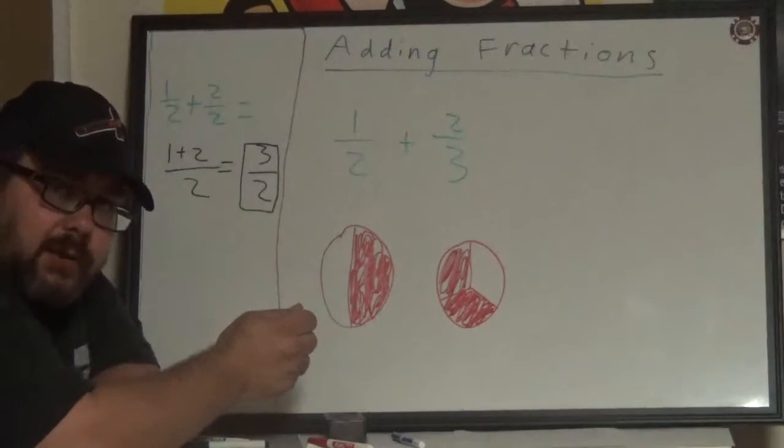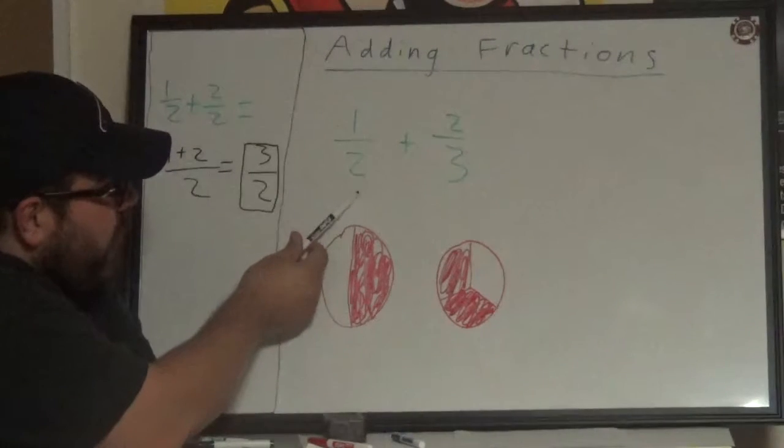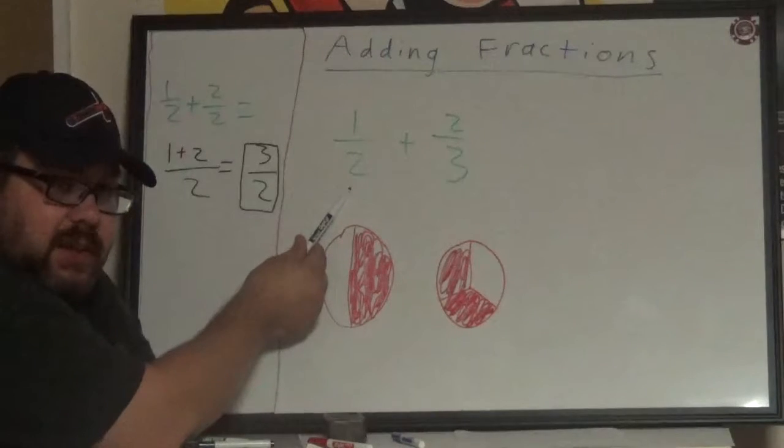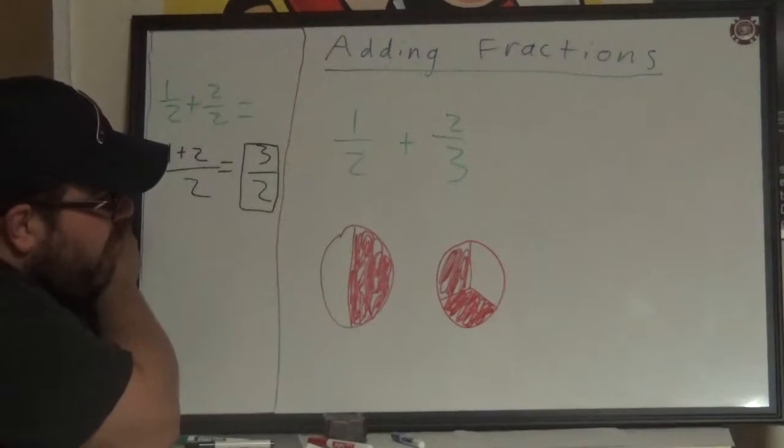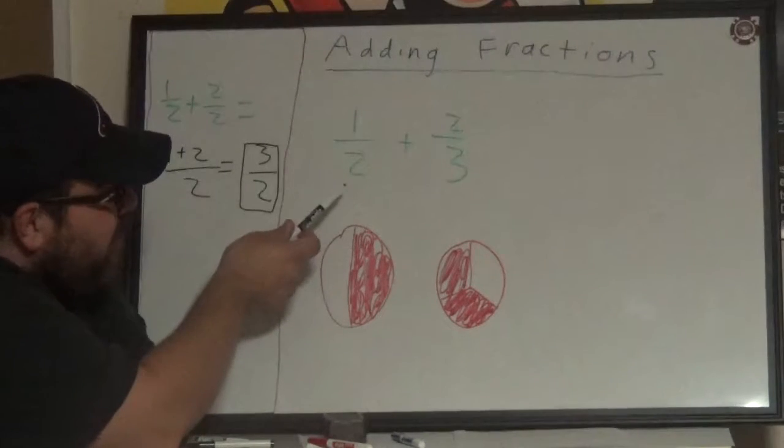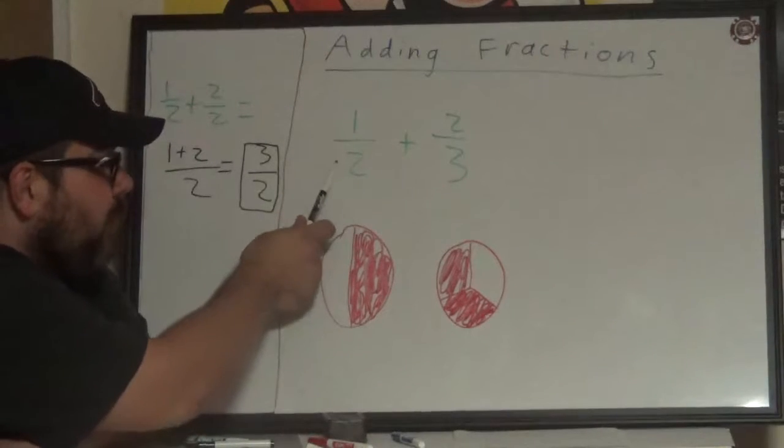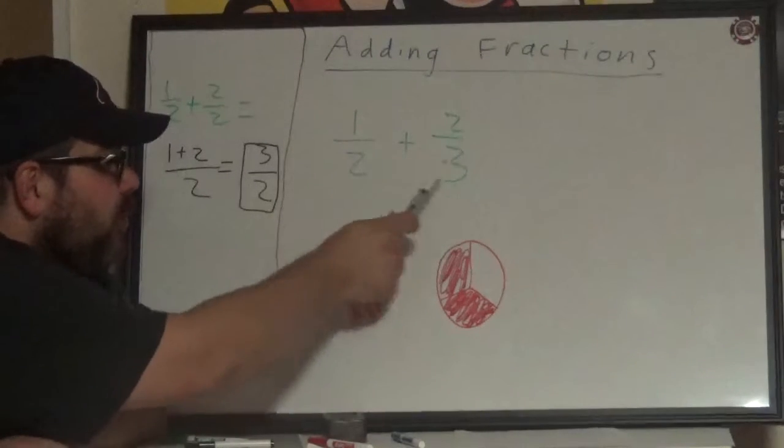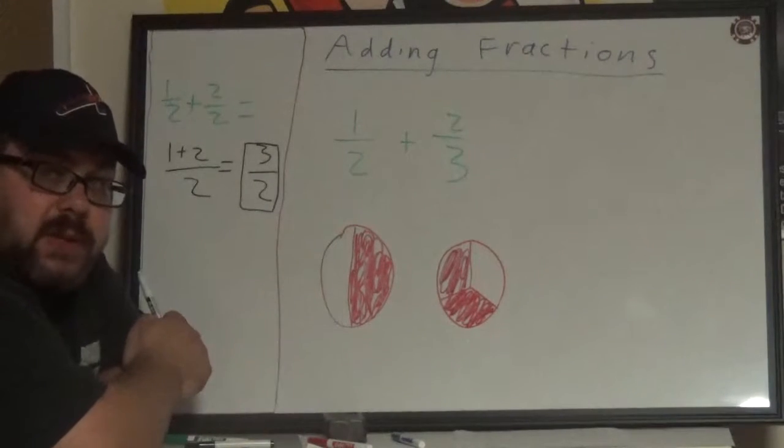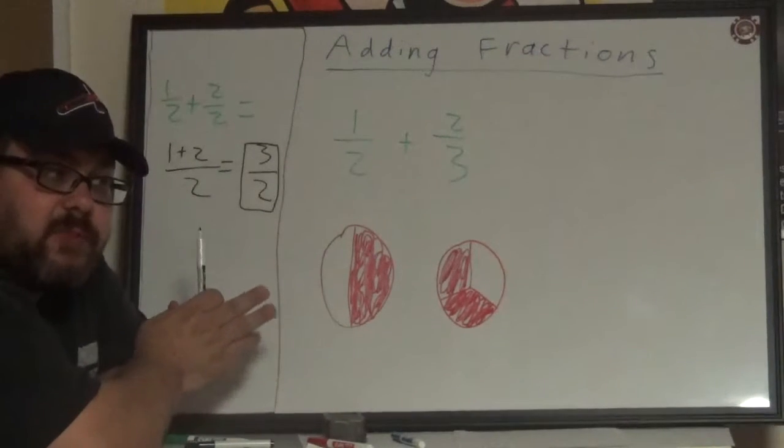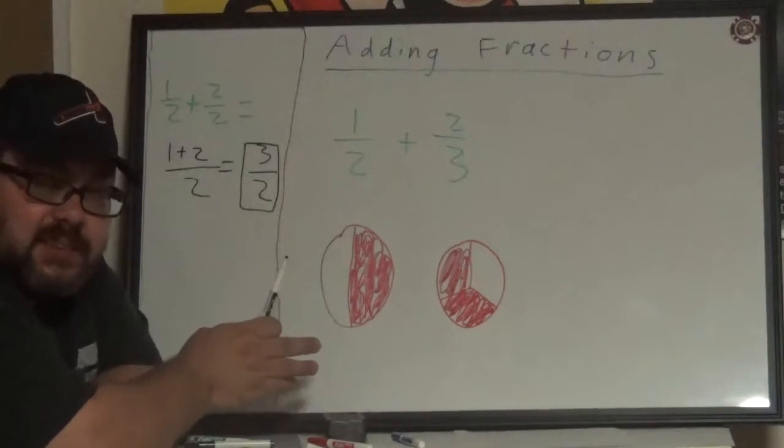So if we do not have a common denominator, as is the case in this example, we have to create one. This example is one over two plus two over three. We have a denominator of two and a denominator of three. The problem is that these fractions, because the denominators are different, are measuring different sizes.